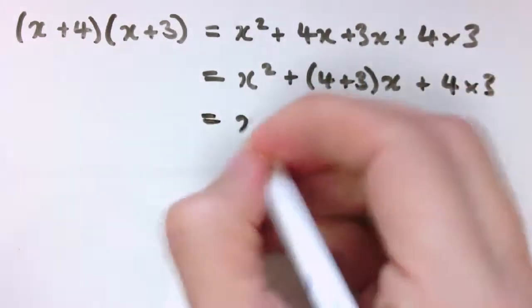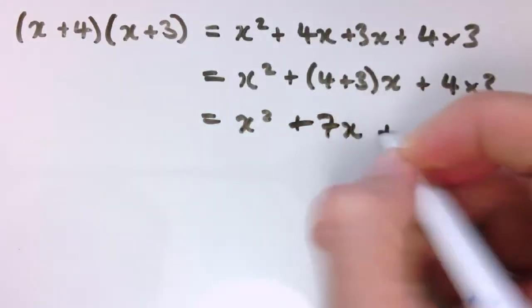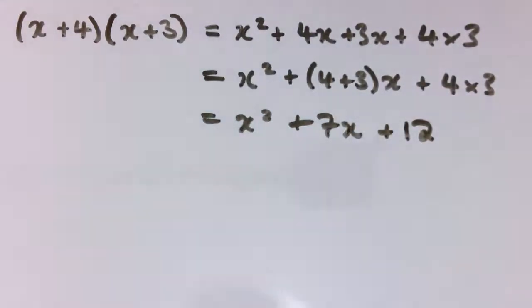Now obviously if I was giving an answer for multiplying out here I would say it's x squared plus 7x plus 12. But the point is what you can see here is this 4 and 3 comes here as 4 plus 3, which is 7, and here is 4 times 3, which is 12.